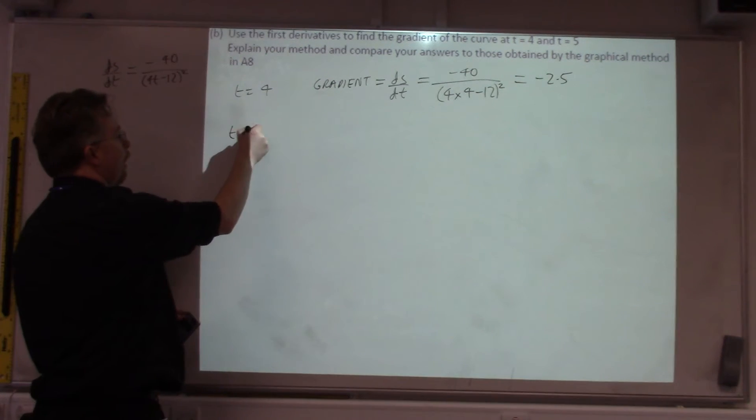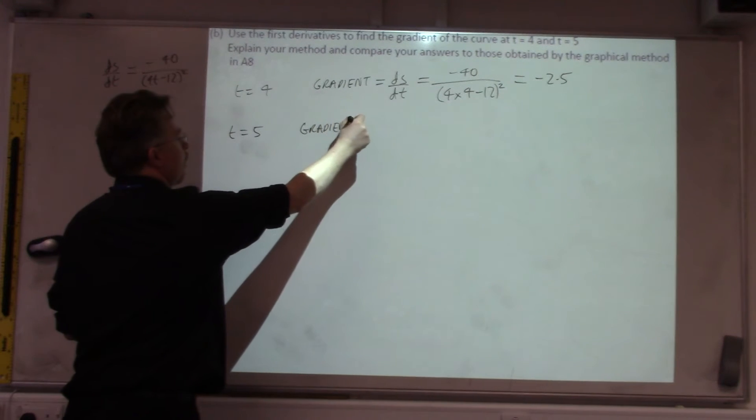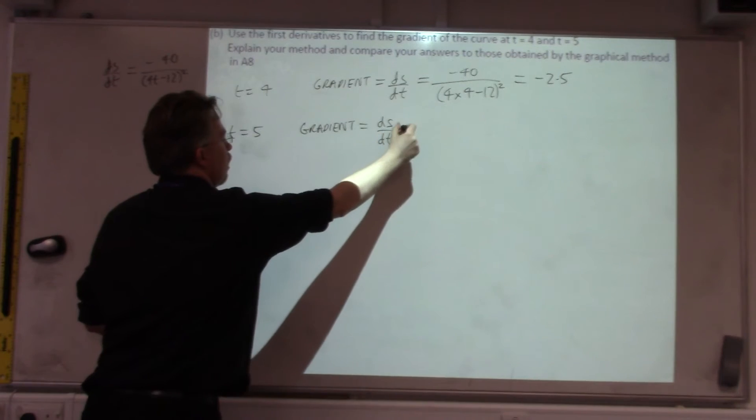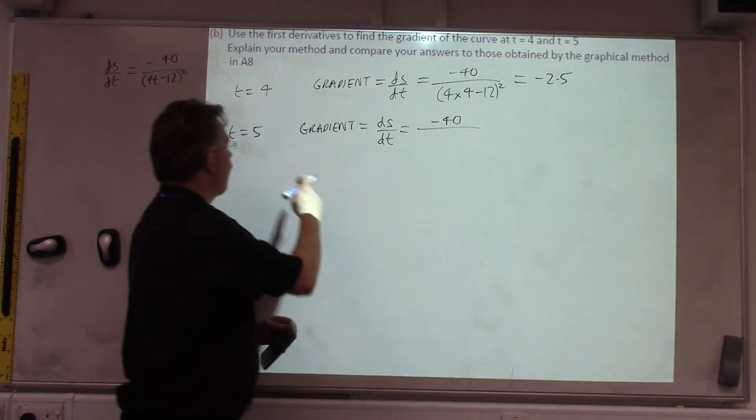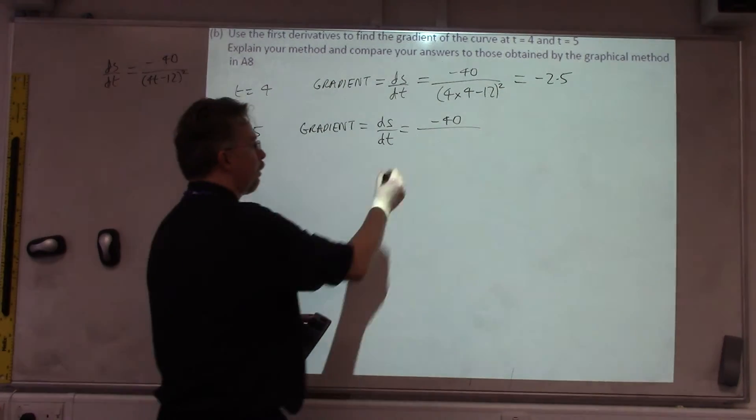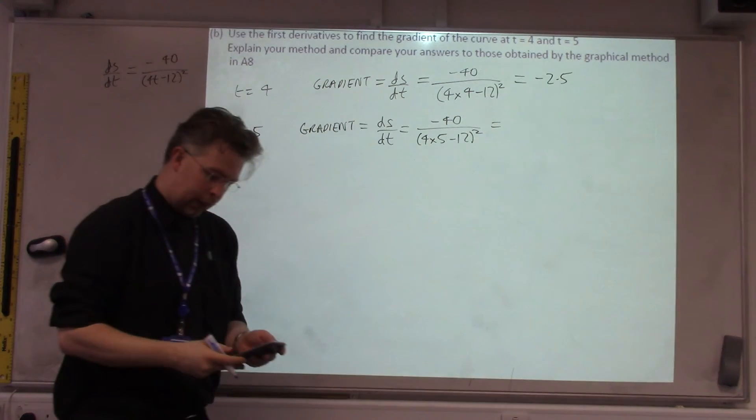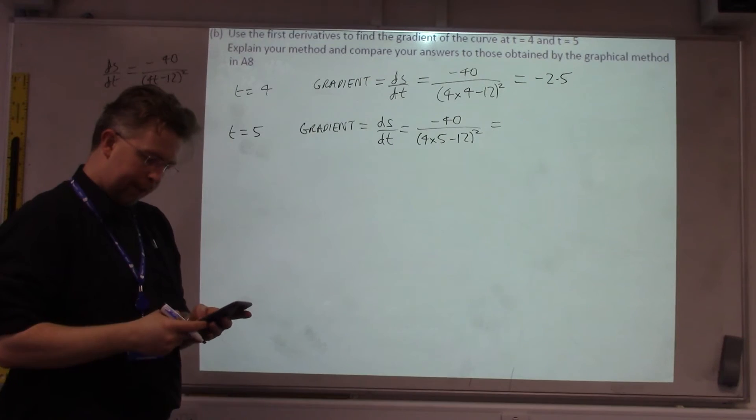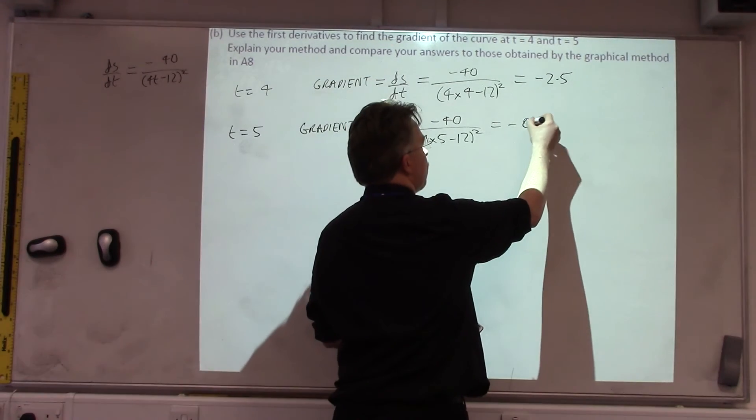And then, T equals 5, do the same thing. However, our T value is 5, so we do 4 times 5, minus 12, all squared for the denominator. So, stick it onto a calculator, we get minus 0.625.